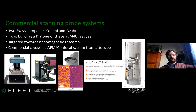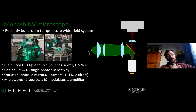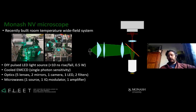The system I've built at Monash is quite simple — you can count all the optical components on your fingers. I've built a DIY pulsed LED instead of a laser, which reduces speckle and interference fringes, and my DIY circuit can pulse it with sub-10-nanosecond rise and fall times — actually better than an AOM. I'm using a high-sensitivity cooled EMCCD camera. The optical layout has lenses for collimating the LED, a dichroic mirror that reflects green into the objective and passes red fluorescence to the camera, plus a low-pass filter. Microwaves are provided by a source, modulator, amplifier, and transmission line to the sample.